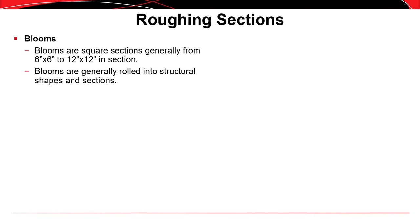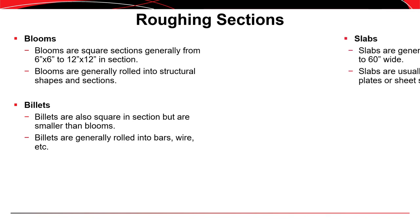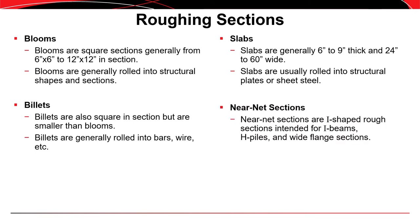The rough sections we deal with are blooms, billets, slabs, and near net sections. A bloom is basically a square section, roughly 6×6 or 12×12 in cross section, generally rolled into structural shapes. Billets are also square but smaller than blooms and are generally rolled into smaller products like bars or wires. A slab is usually rolled into structural plate or sheet steel and is generally 6 to 9 inches thick and 24 to 60 inches wide. A near net section is not rectangular — it has a shape approximately like an I or H, produced as a rough section but closer to the final shape, requiring less energy to finish.